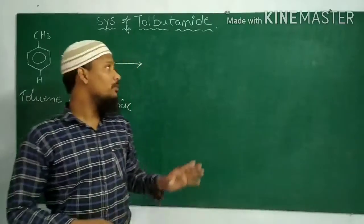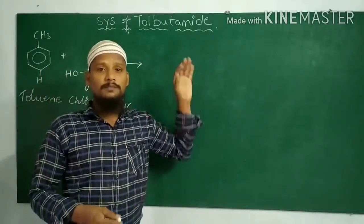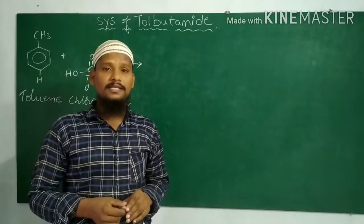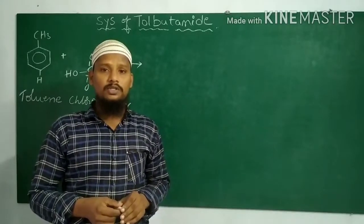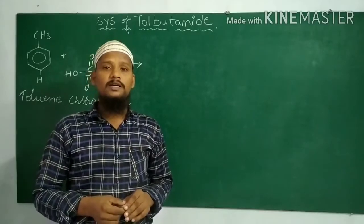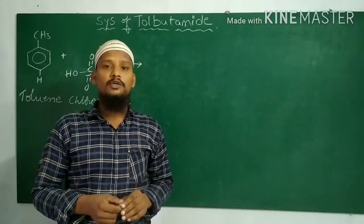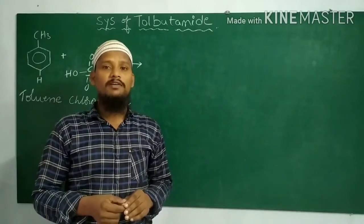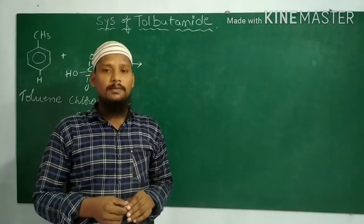Tolbutamide is the drug that stimulates the beta cells of the pancreas and increases the production of insulin, so that the blood glucose levels are completely utilized by the tissues. In this way, we can alleviate the symptoms of type 2 diabetes.